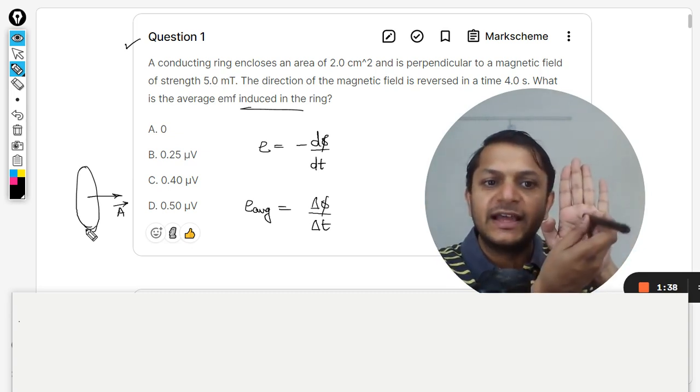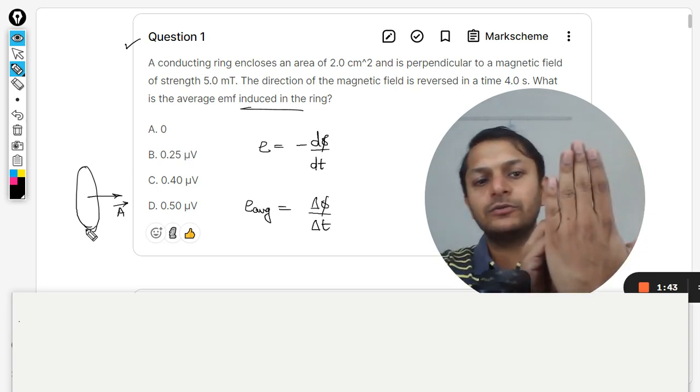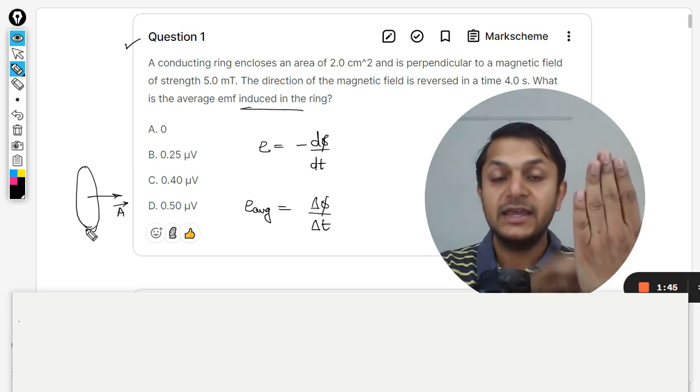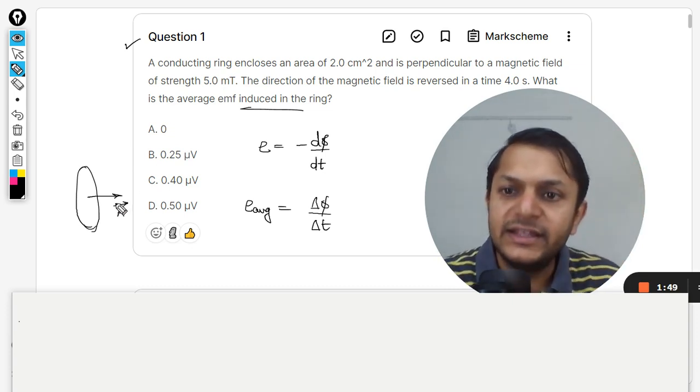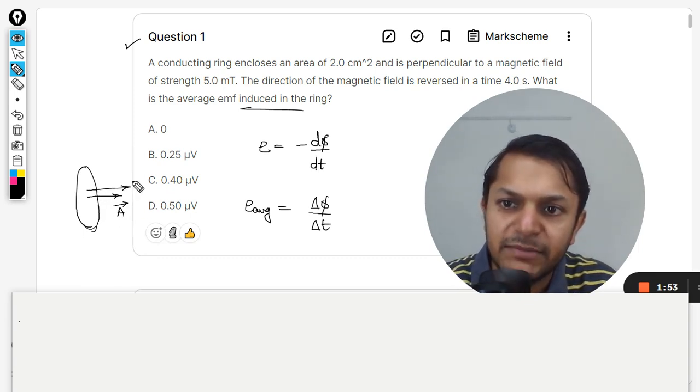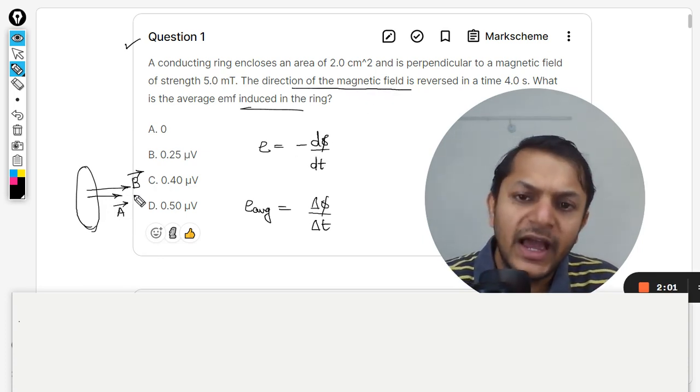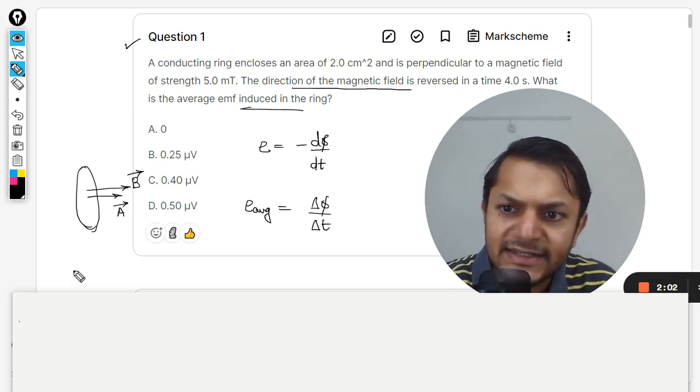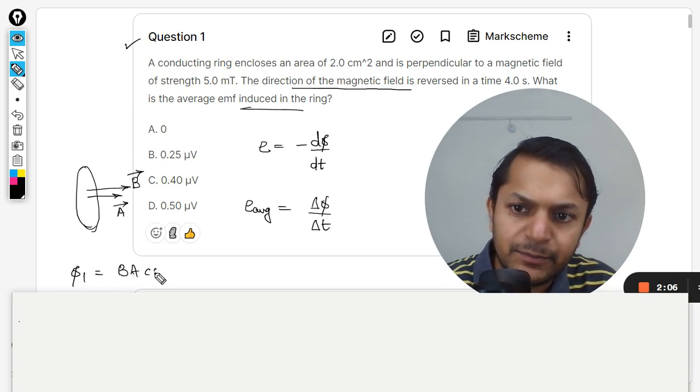Now the palm is watching me so the direction of the area is now changed accordingly. This is the area vector here and initially this is the magnetic field vector. The direction of the magnetic field. So initially the flux can be taken as BA cos 0 degree.